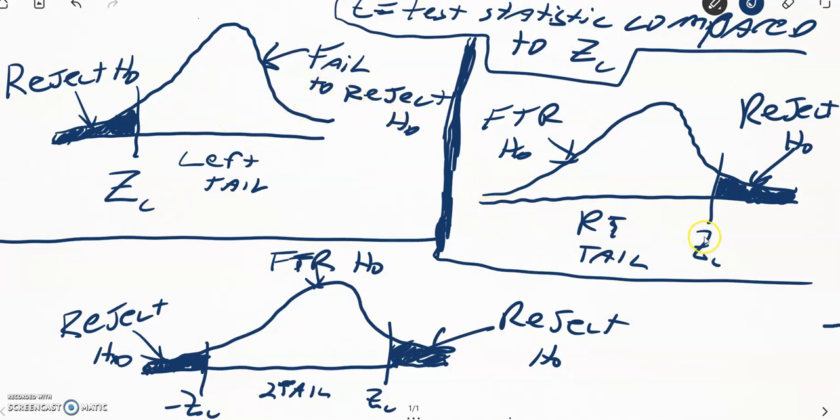For a right tail test, here's your z-critical value. If that test statistic t is greater than the z-critical value in a right tail test, we reject the null hypothesis. If that test statistic t is less than the z-critical value, we fail to reject the null hypothesis. FTR is my shortcut for fail to reject.